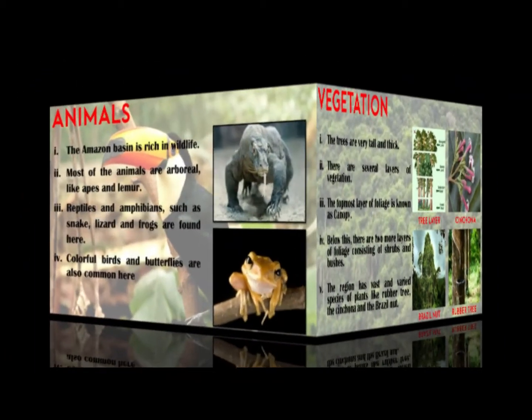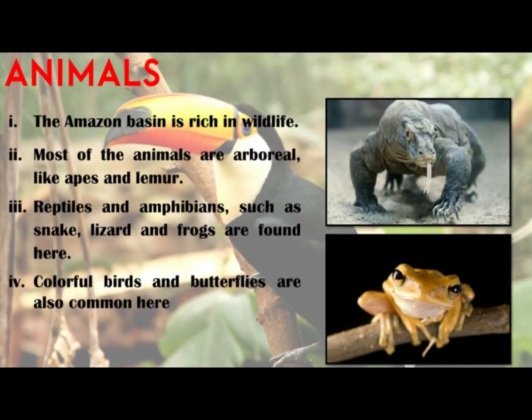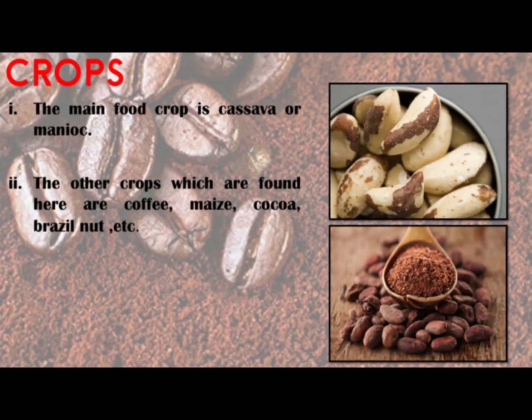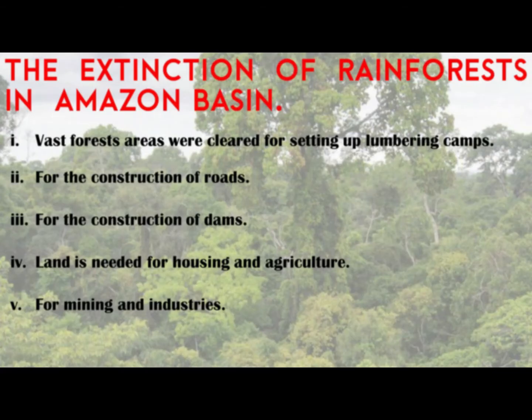About animal life, the Amazon basin is rich in wildlife. Most of the animals are arboreal, meaning adapted to living on trees — for example, apes and lemurs. Reptiles and amphibians such as snakes, lizards, and frogs are found here. Colorful birds and butterflies are also common here. The most important food crop is cassava or manioc. Other crops grown include coffee, maize, cocoa, and brazil nut.